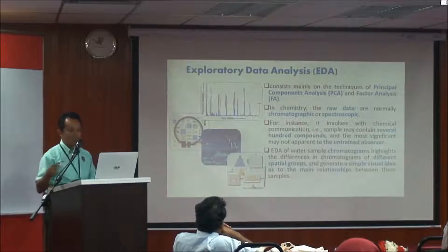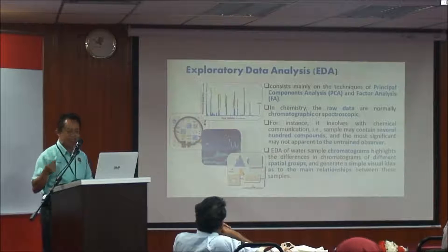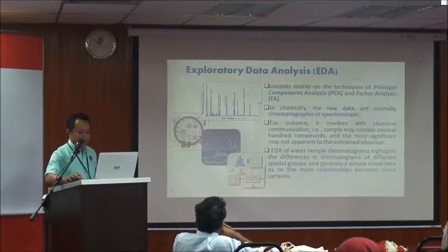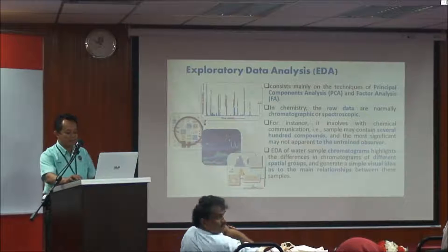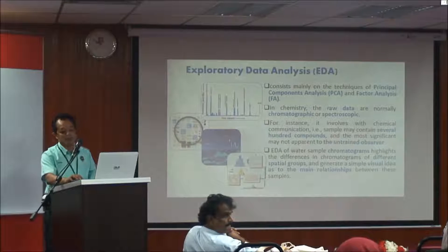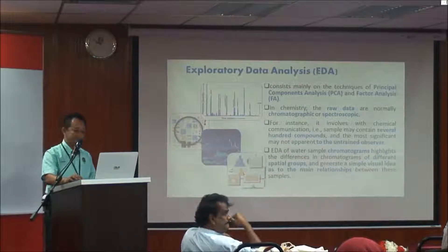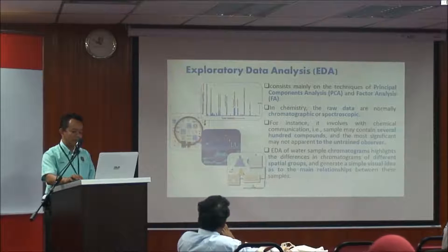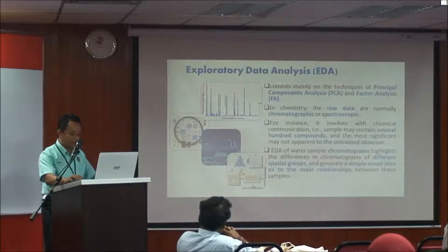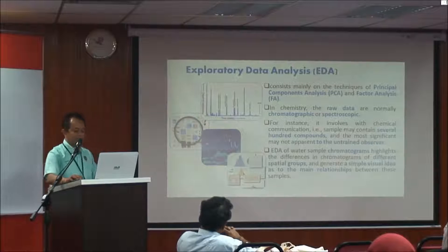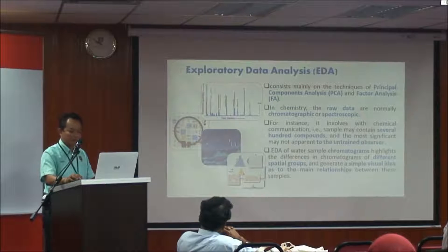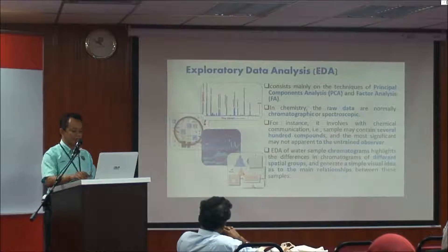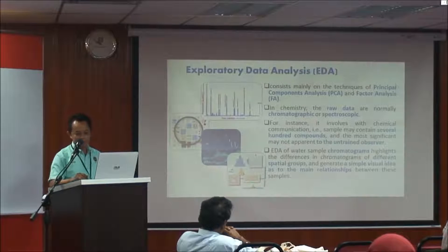We need to analyze the data. For instance, with chemical data, a sample may contain several hundred compounds and the most significant ones may not occur to the untrained observer. The idea of auto-sample chromatogram analysis is to highlight differences in chromatograms of different spatial groups and generate a simple visual idea of the main relationships between samples.